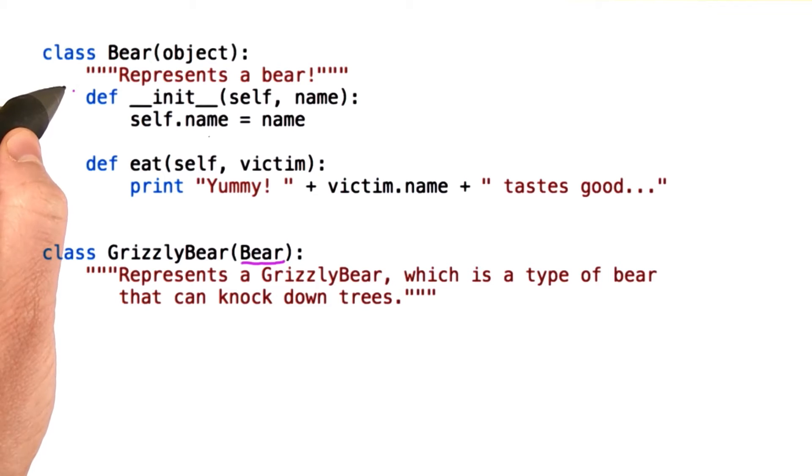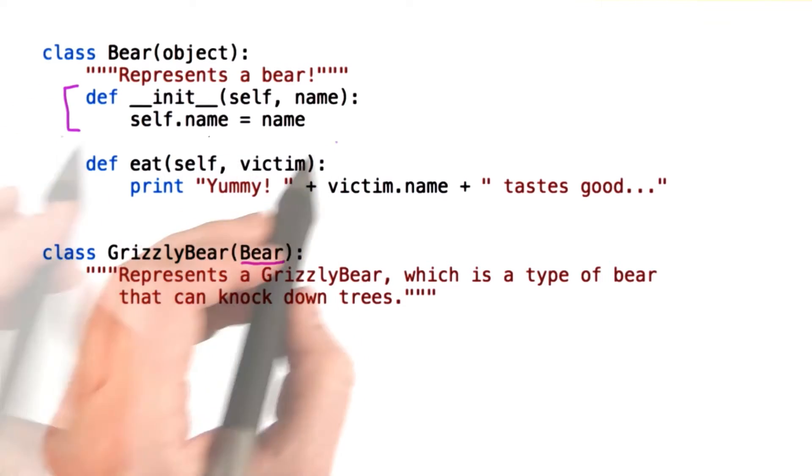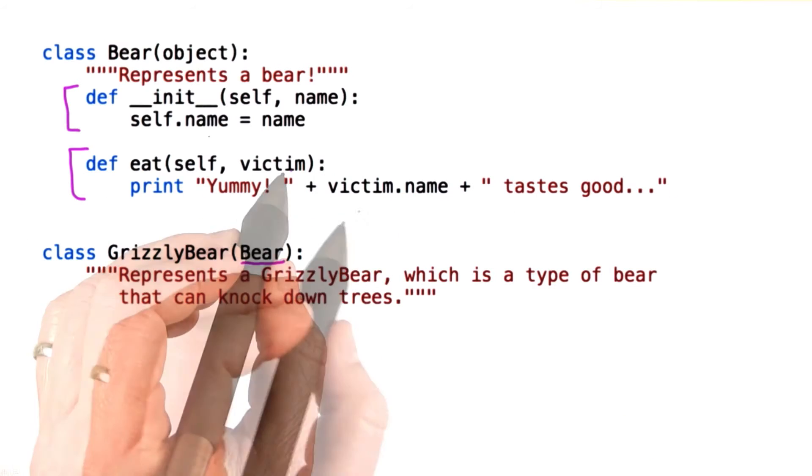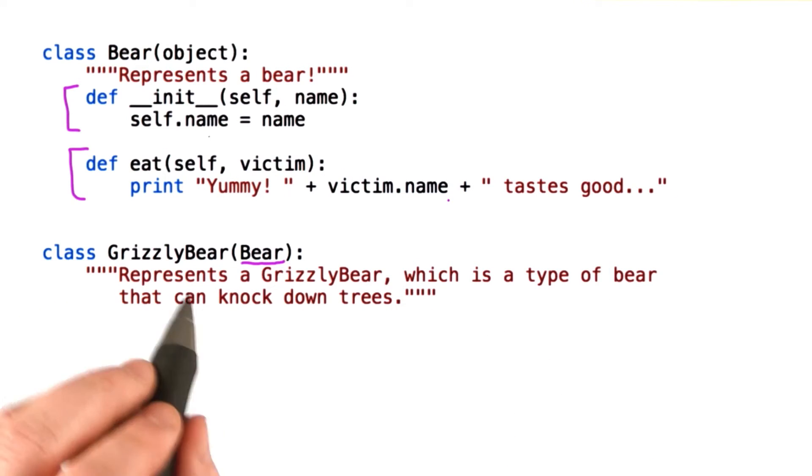In the bear class, we've defined attributes. We've got an initializer that sets the name of the bear, and we've got an eat method that eats a victim. A victim has a name. We'll assume the victim's a human.